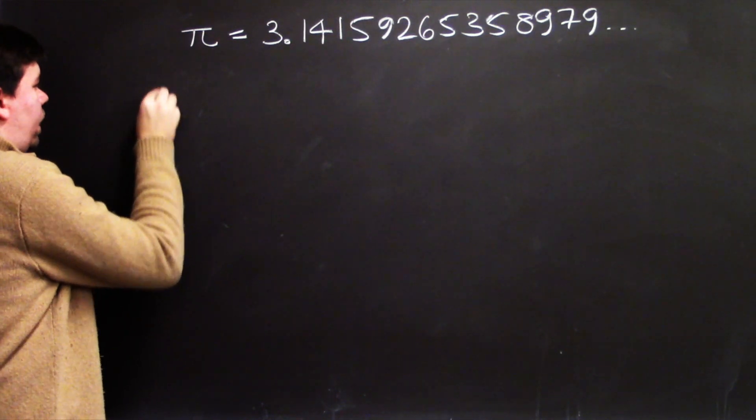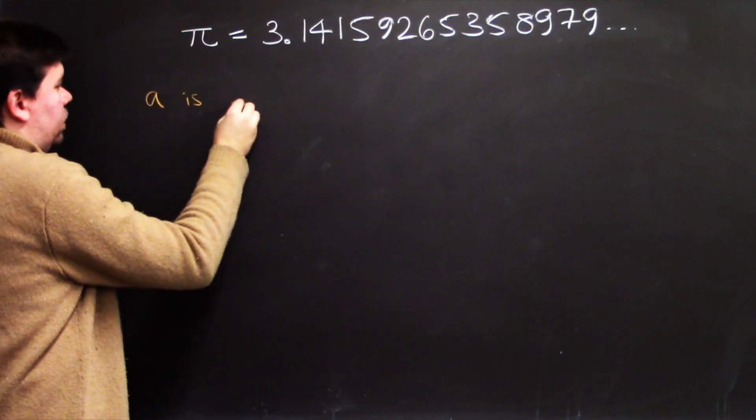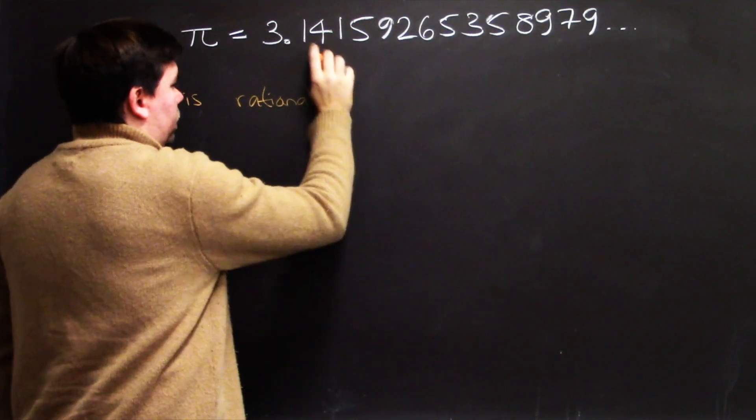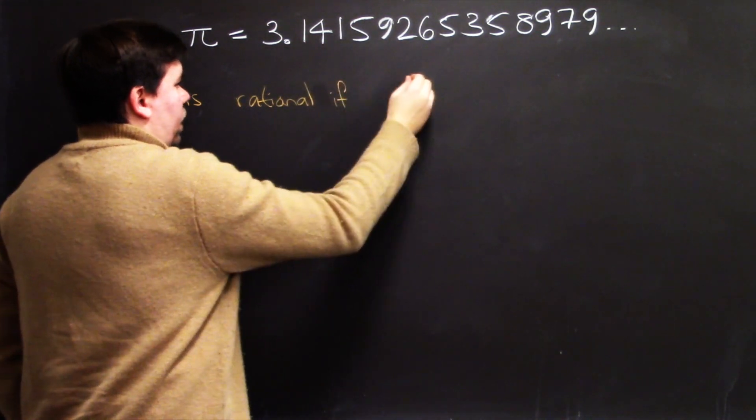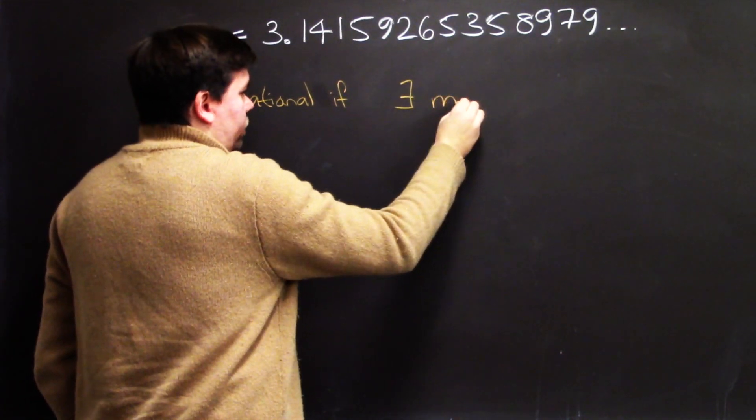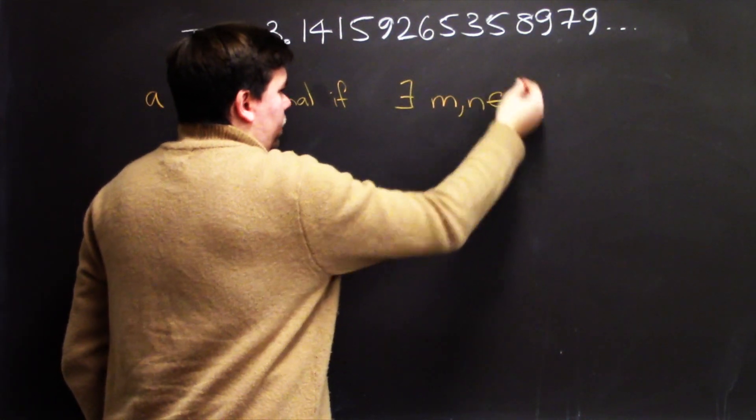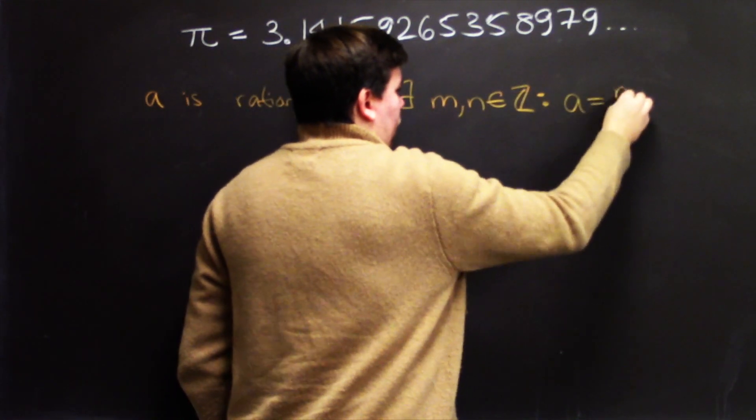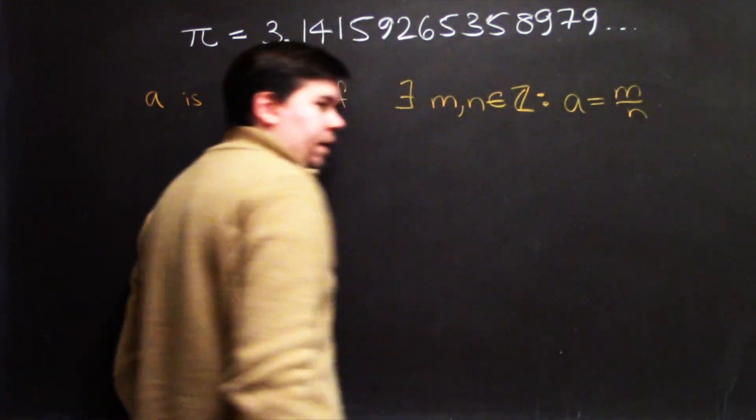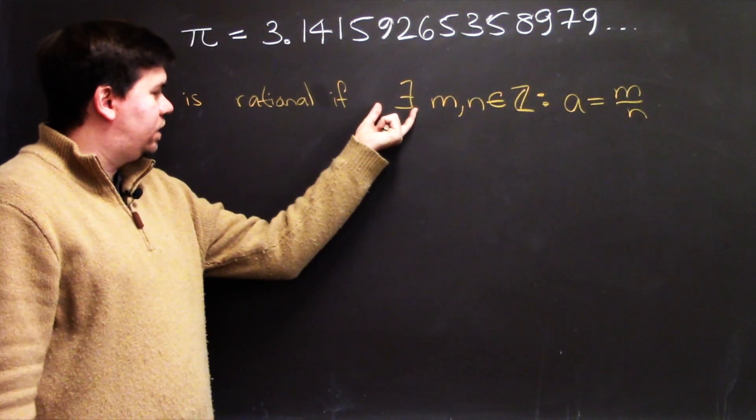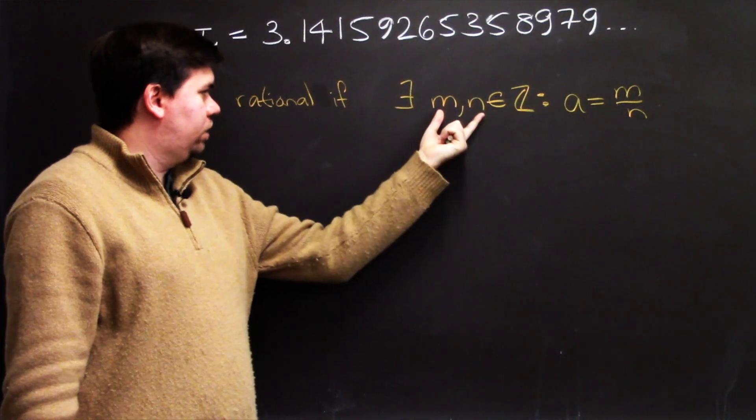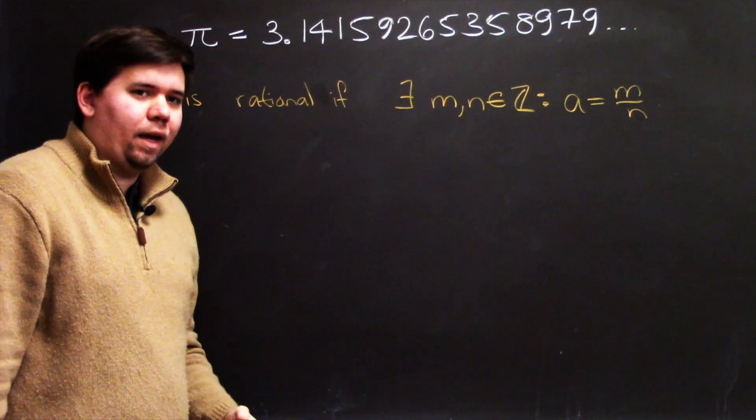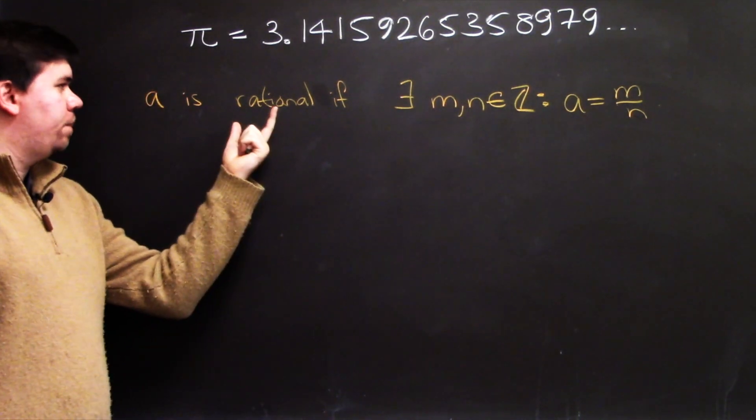So we'll say some number a is rational if there exists some integers m and n such that a equals m divided by n. Here's our symbolic notation. There exist integers m and n such that a equals m divided by n. And so that's what it means for a number to be rational.